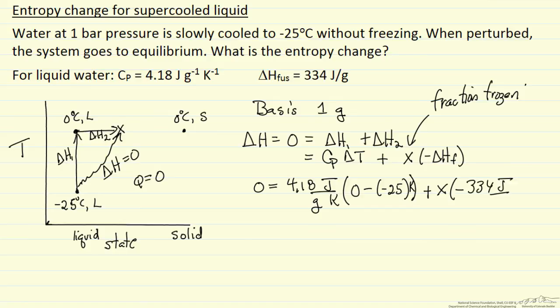Delta H of fusion is the energy we have to put in to melt, so it's negative when we're freezing. So we can solve for x, which is going to be dimensionless, it's just a fraction, and it's going to equal 0.31.